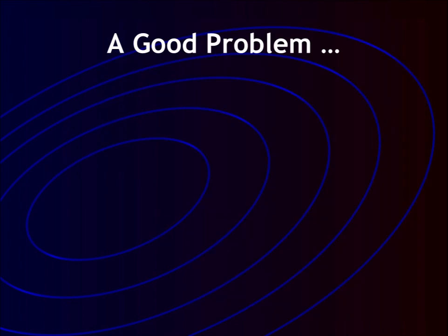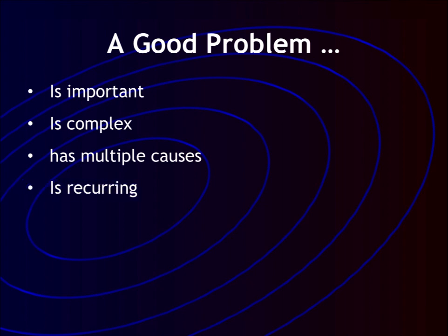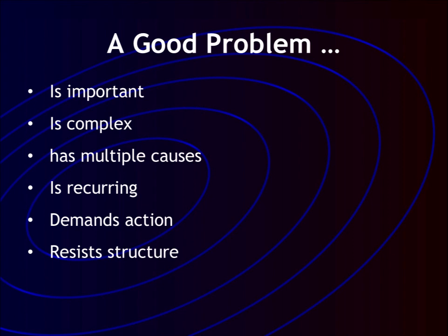Social scientists refer to a certain kind of problem as a wicked problem because they are so difficult to solve. Wicked problems are important — they truly need a solution. They are complex, meaning that they consist of many interdependent parts. They have multiple causes. Too often we fail to resolve such problems because we assume there is a straight line between one cause and the negative effect, when in fact there may be many causes that are separated by time and space. A wicked problem is also a recurring problem — they seem to crop up in a cyclical manner. These kinds of problems also demand action; you can't just leave it alone and hope it goes away. This kind of problem also resists structure, and quite often leads to very surprising solutions.